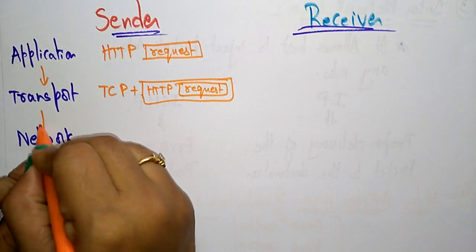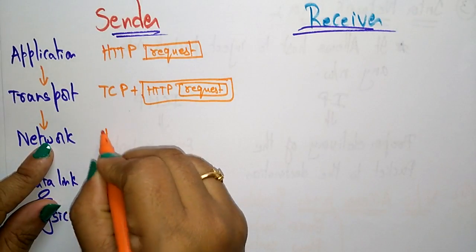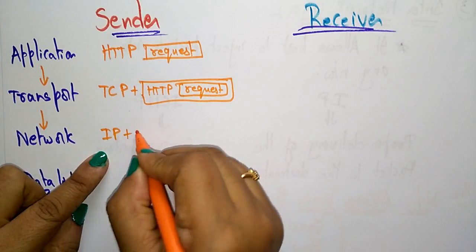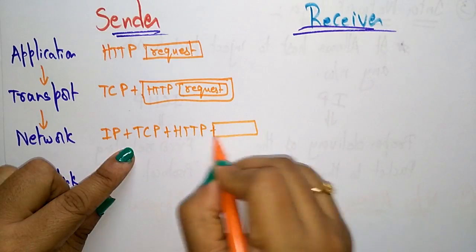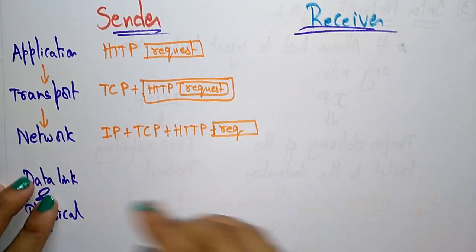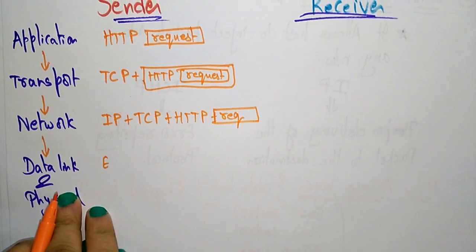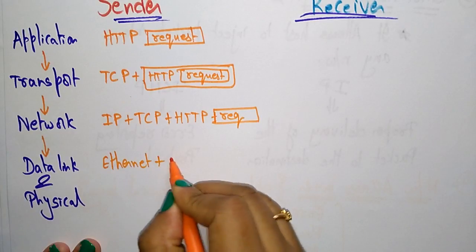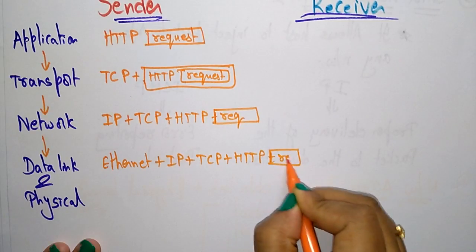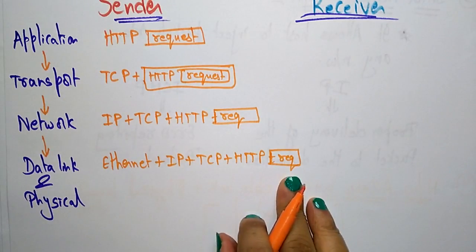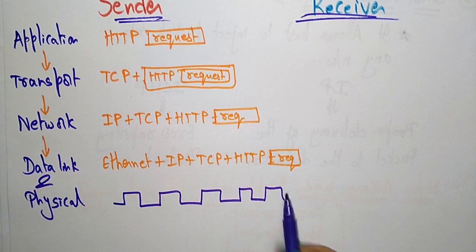When the transport layer sends the message to the network layer, the network layer adds an IP address to that message — so we now have IP plus TCP plus HTTP along with the request. Then it comes to the data link layer, which adds the Ethernet protocol — giving us Ethernet plus IP plus TCP plus HTTP and the request. The physical layer then sends everything in the form of signals.